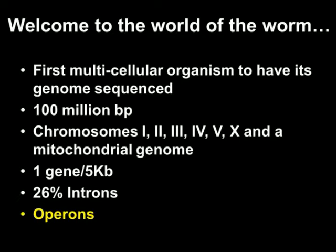C. elegans was the first multicellular organism to have its genome sequenced — roughly 100 million base pairs. That is much bigger than the E. coli genome — about 20 to 30 times that of E. coli — but smaller than the human genome.